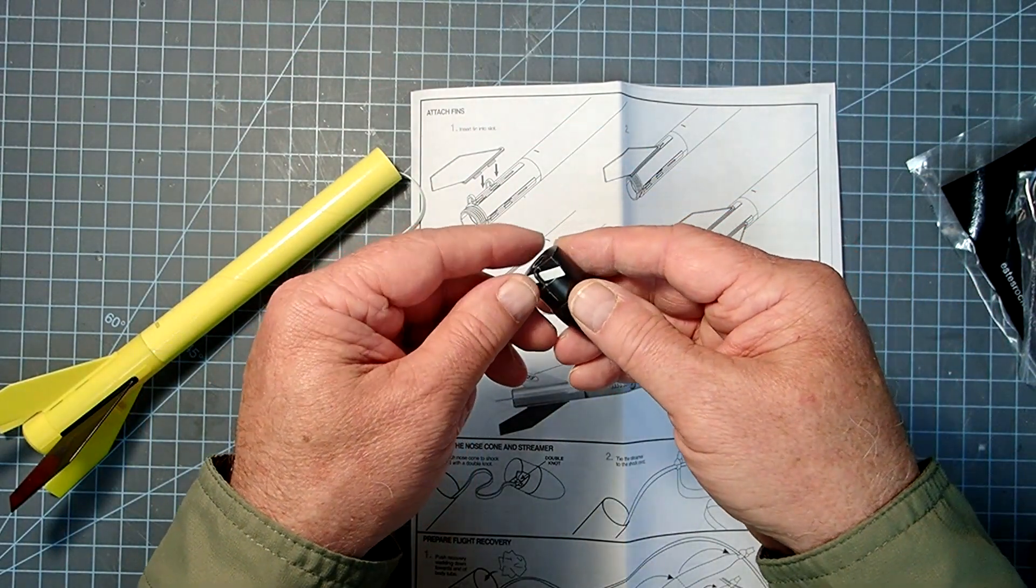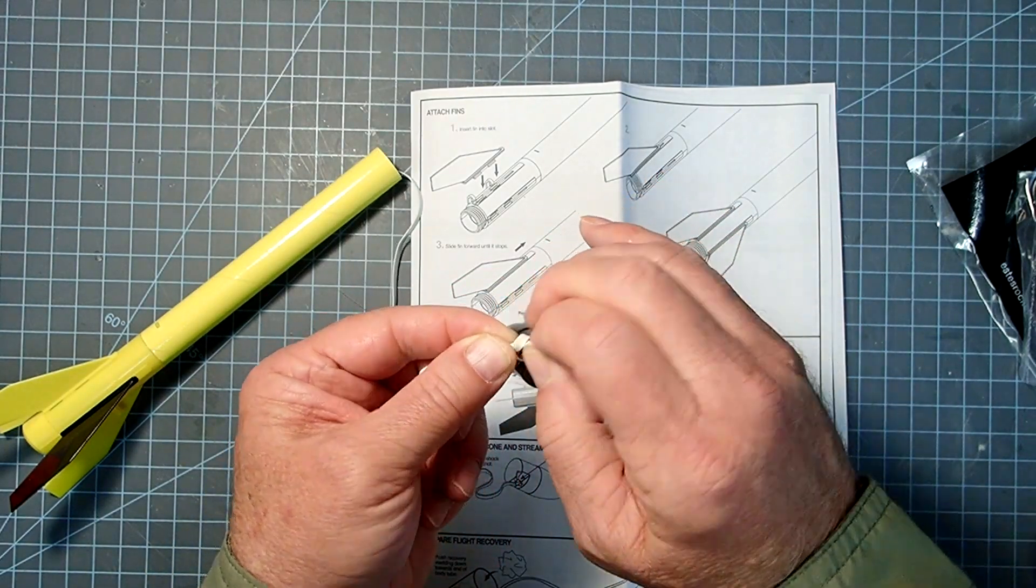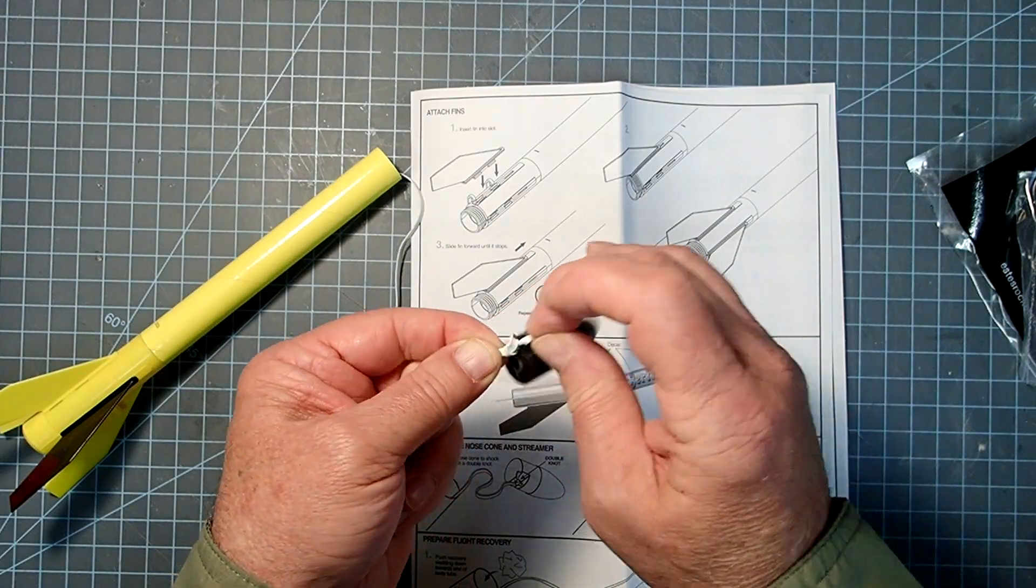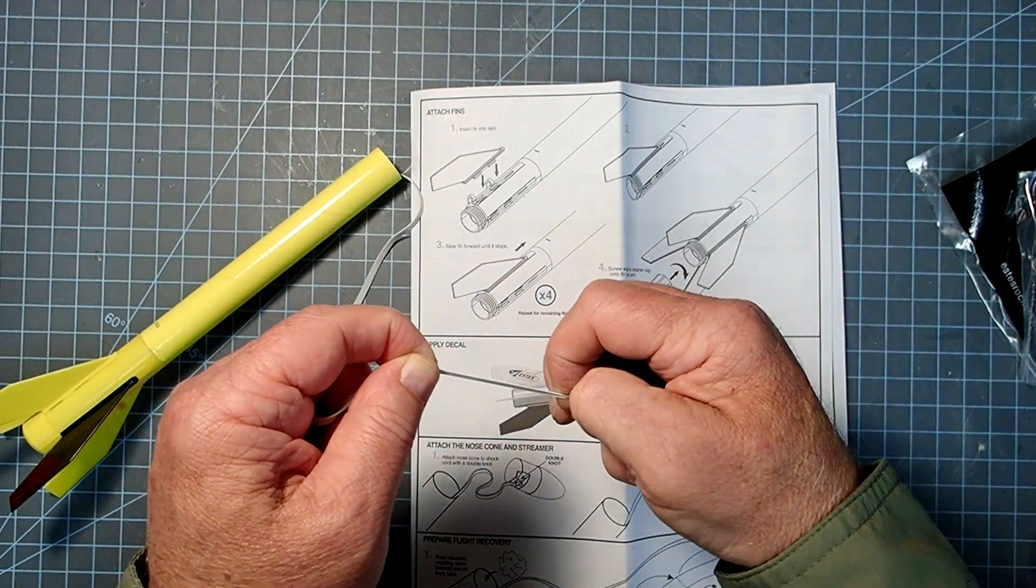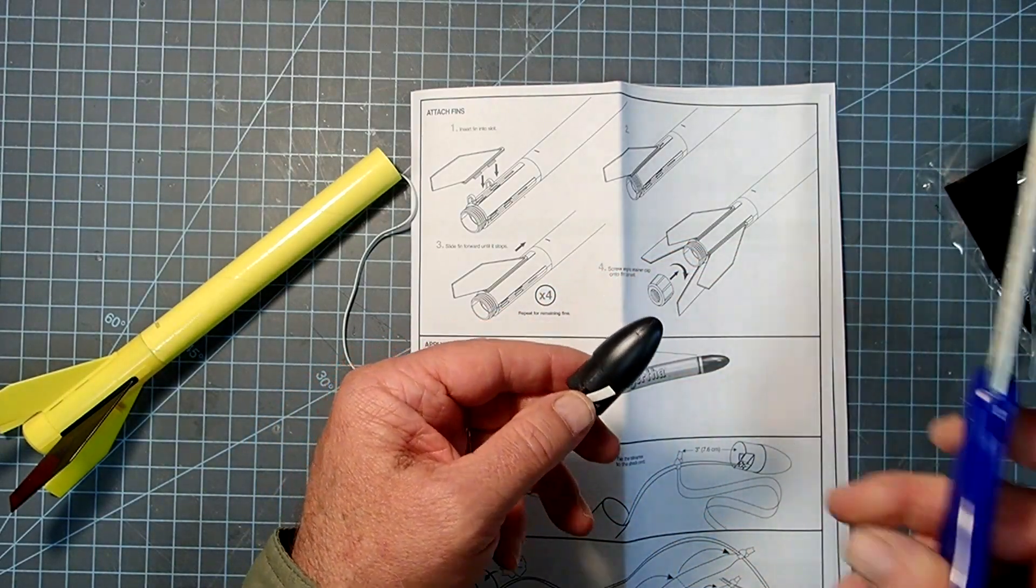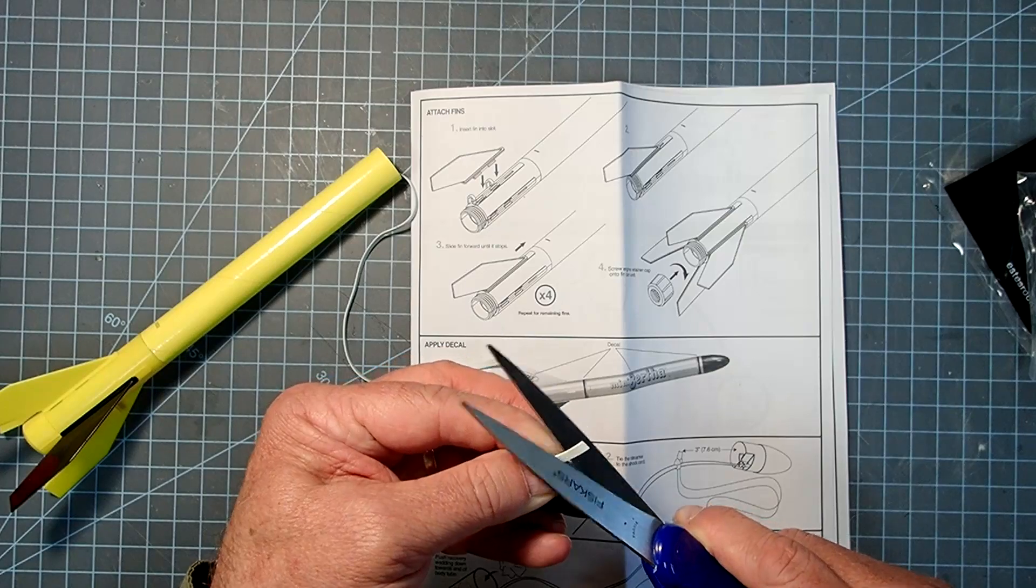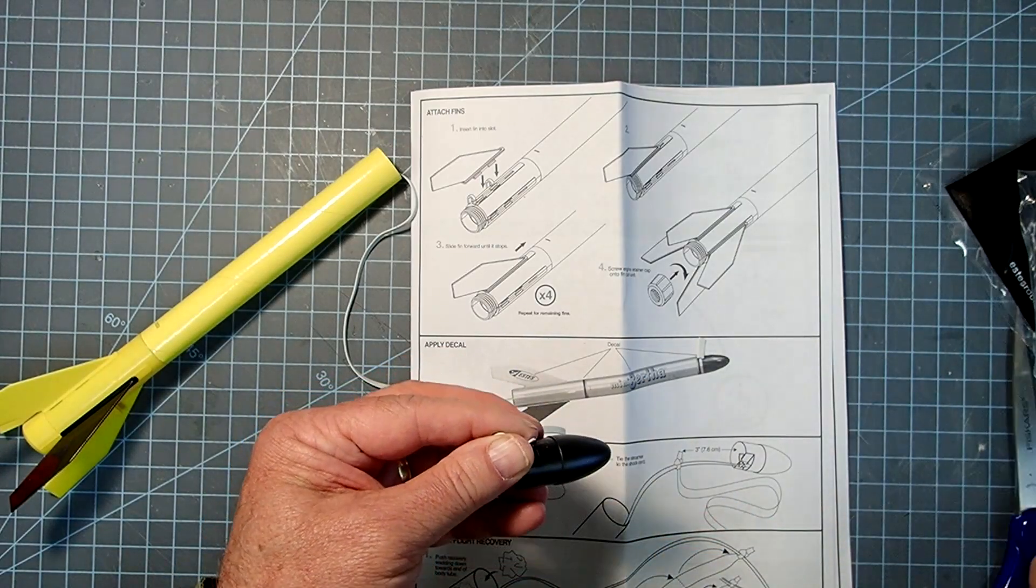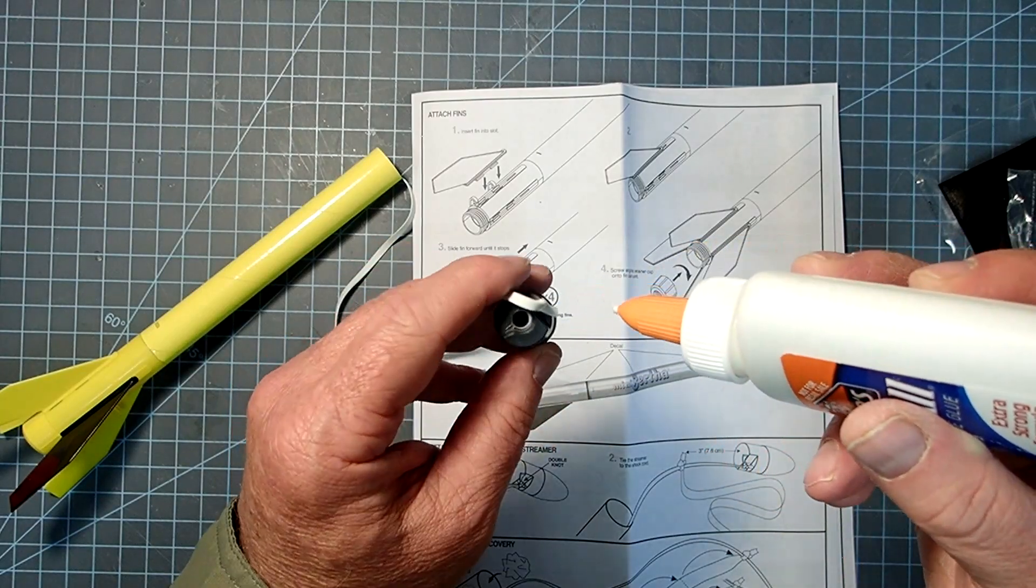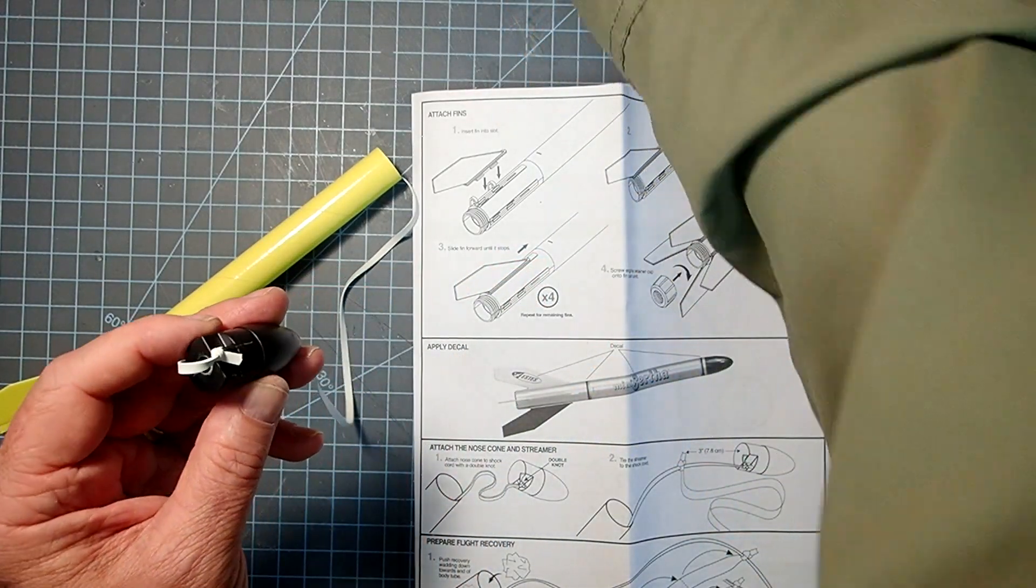And then we're going to tie the other end of our shock cord onto the nose cone, also using a double knot or two half hitches. Now, this one, you do need to be very careful about too much free end of the knot because we don't want it to get caught up here between the shoulder and the body tube. So I'm going to cut this back to about a quarter of an inch or about six millimeters for the metrically inclined. And the same thing here, I'm going to add just a little dab of white glue or wood glue, just enough to help hold that in place.